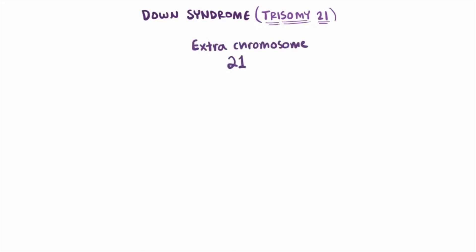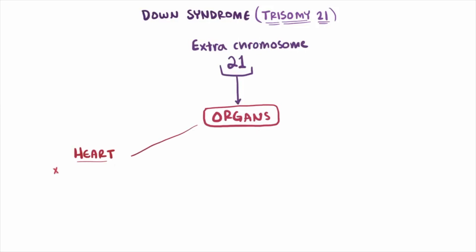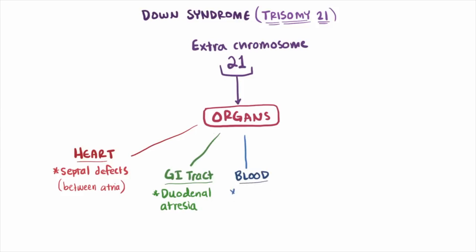Trisomy 21, or Down syndrome, is a well-known chromosomal disorder that occurs in one in every 700 births. Even though people with Down syndrome might act and look similar, each person has different abilities. People with Down syndrome usually have an IQ in the mild to moderately low range and are slower to speak than other children. Some common physical features of Down syndrome include heart, gut, blood, and brain issues or defects.